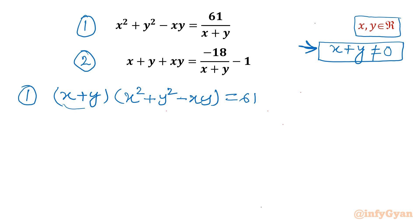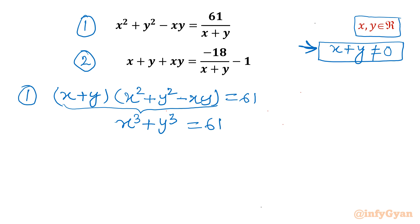This matches the algebraic identity a cubed plus b cubed equals a plus b times a squared plus b squared minus ab. So equation 1 converts to x cubed plus y cubed equal to 61.